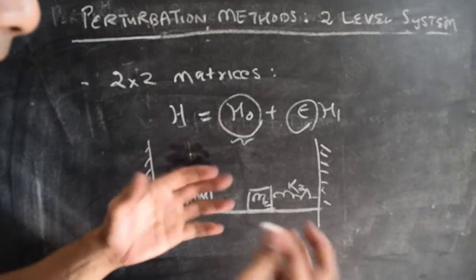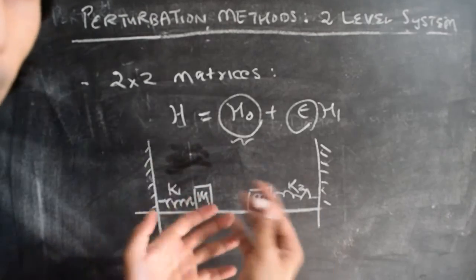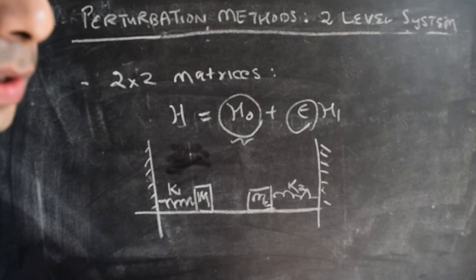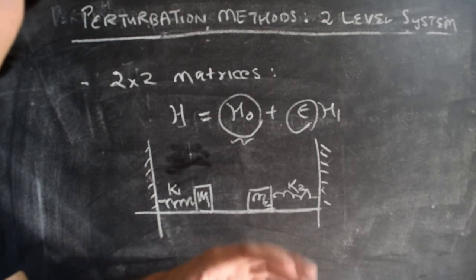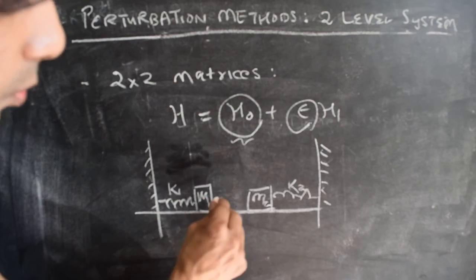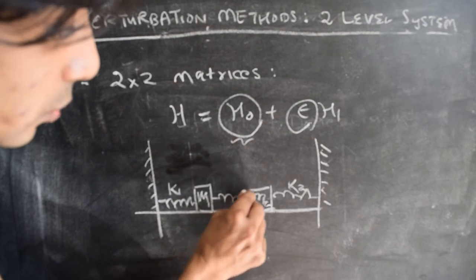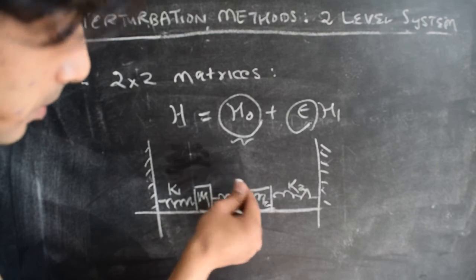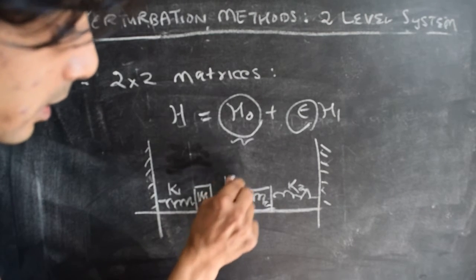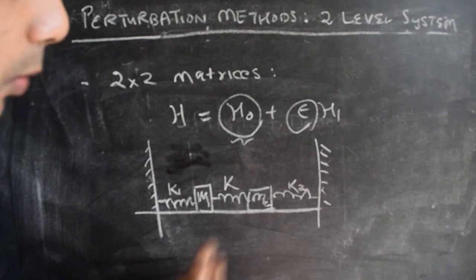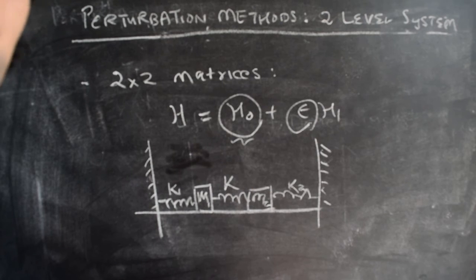These oscillators can be excited independently with no interaction between them. A key phrase here is that we're really talking about interacting two-level systems. What happens if we couple these two masses with a coupling constant — let's call it kappa, which is more generically used — which plays the role of epsilon in this case? What happens to the modes of the system as we vary kappa?